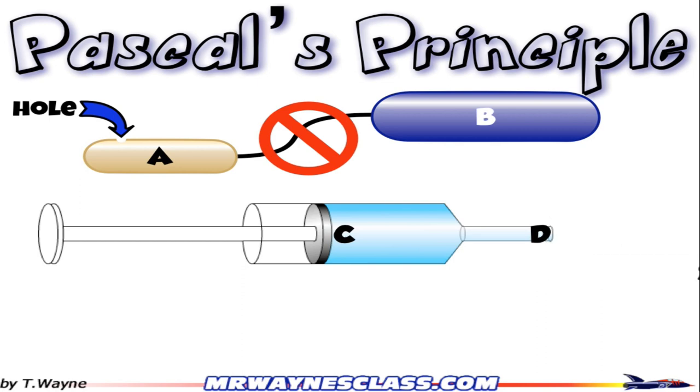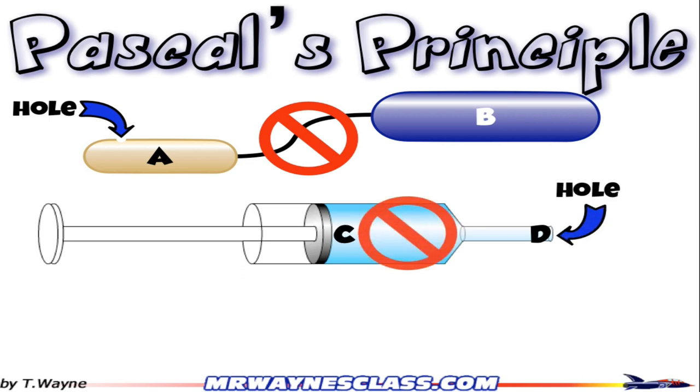Now if I remove the stopper, I cannot apply Pascal's Principle anymore, because it's no longer enclosed due to the hole on the right side.